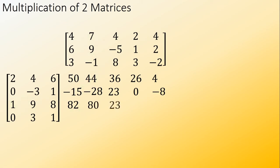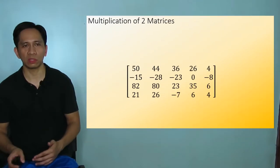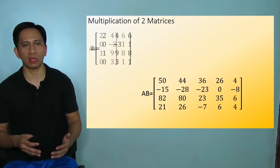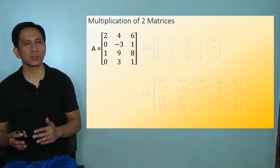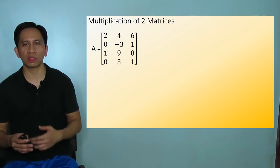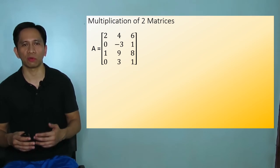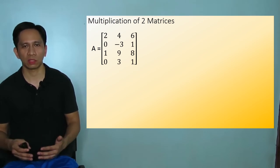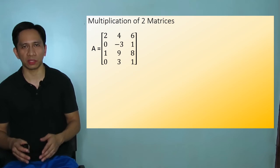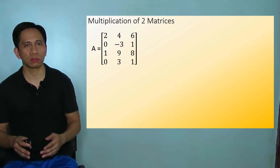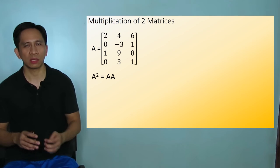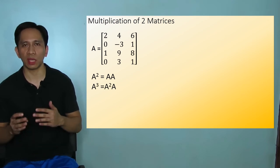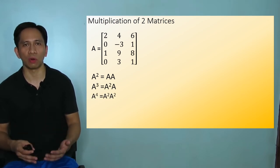You do this until the last row and column are through. This is the product of matrix A and B. Exponentiation of a matrix is the same concept as multiplication of matrices but uses the same matrix as factors. So A squared is equal to A times A, A cubed is equal to A squared times A, and so on.